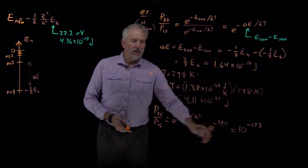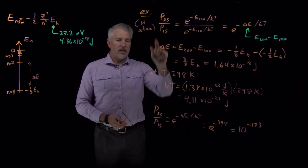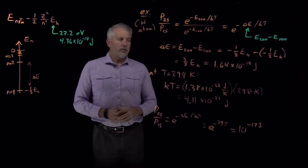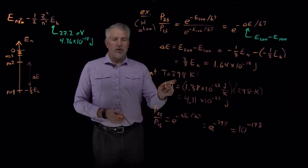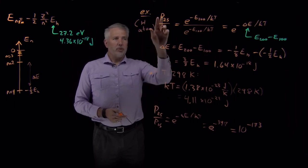That's an almost unimaginably small number. The probability of finding an electron in the 2s state is so small that if we have a universe full of hydrogen atoms lying around at 298 Kelvin, chances are we would not see a single one of them in the 2s state. They're all going to prefer, greatly prefer, to be in the 1s state.